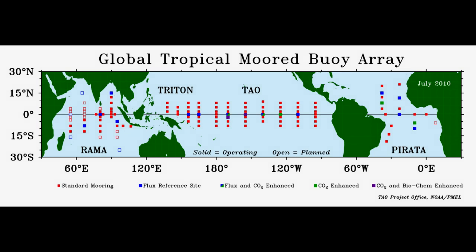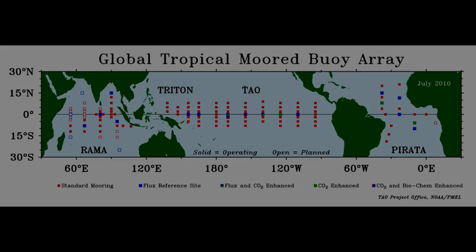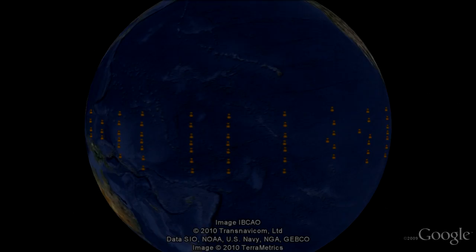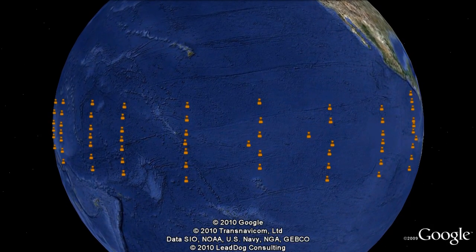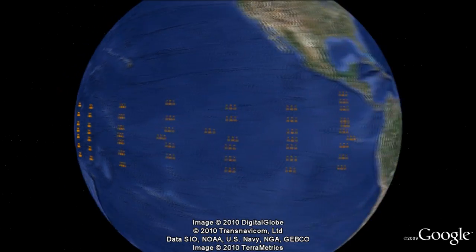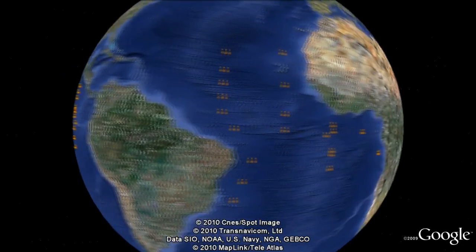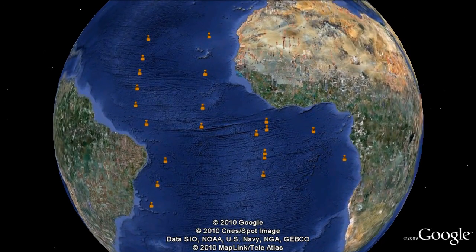The Global Tropical Moored Buoy Array is a multinational effort to provide data in real time for climate research and forecasting. Major components include the TAO/Triton Array in the Pacific, PIRATA in the Atlantic, and RAMA in the Indian Ocean.